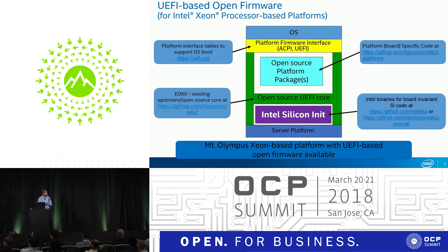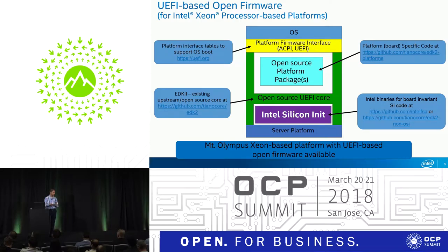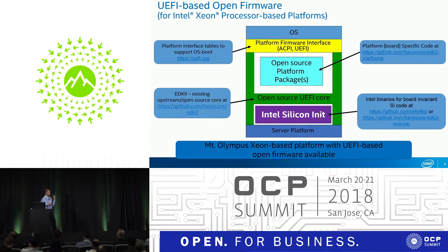The yellow portion at the top is the part that talks to the OS. The OS really doesn't know the truth about the platform — it believes whatever the platform interfaces tell it. For example, I can have 10 cores and tell the OS there are five, or have one terabyte of memory and report only one gigabyte. Those platform interface specifications are part of the UEFI org specifications, and that code is available.